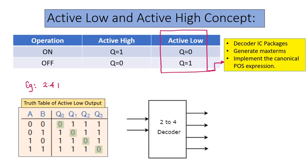Here is an example of a 2-to-4 decoder with inputs A and B, and outputs Q0, Q1, Q2, Q3. The decimal notations correspond to the input variables. For decimal notation 0, Q0 equals 0, indicating active low. Q1 is 0 for decimal notation 1, Q2 is 0 for decimal notation 2, and Q3 is 0 for decimal notation 3.